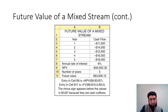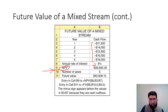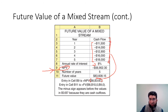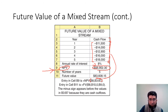In Excel it is much easier. We have years one through five with the same cash flows listed at eight percent. We use the NPV function, which takes the interest rate from cell B8 and the cash flows from cells B3 to B7. This gives a net present value of $56,902.30, which is then taken back to the future value to get $83,608.